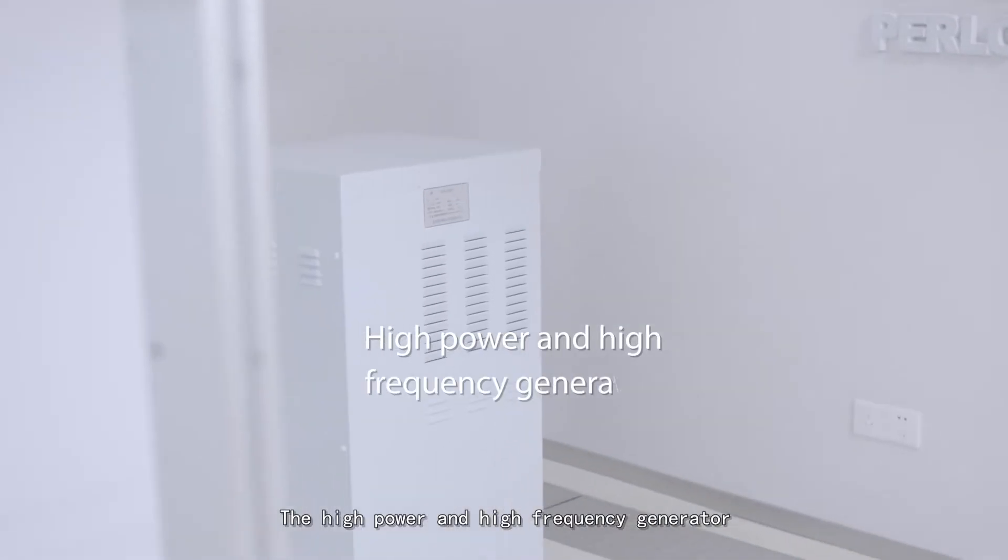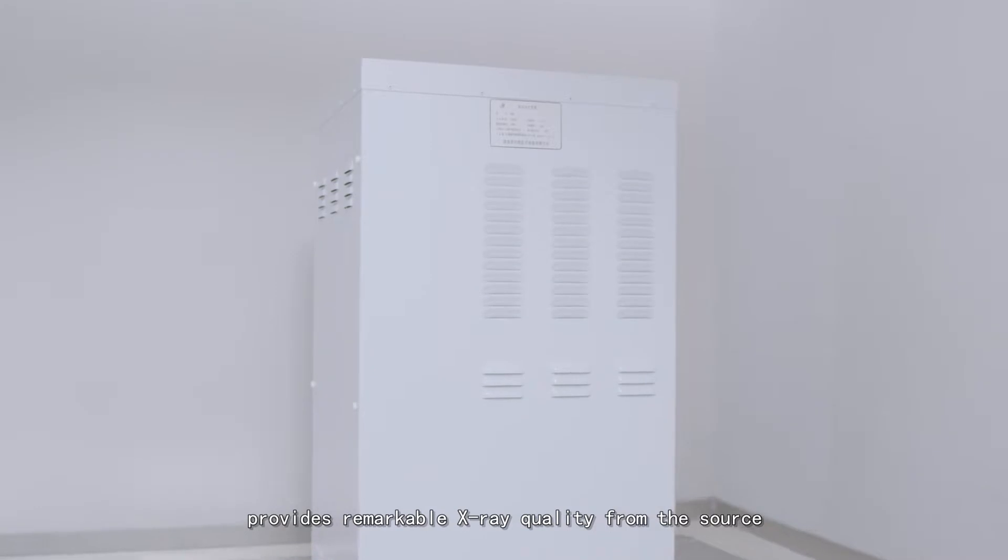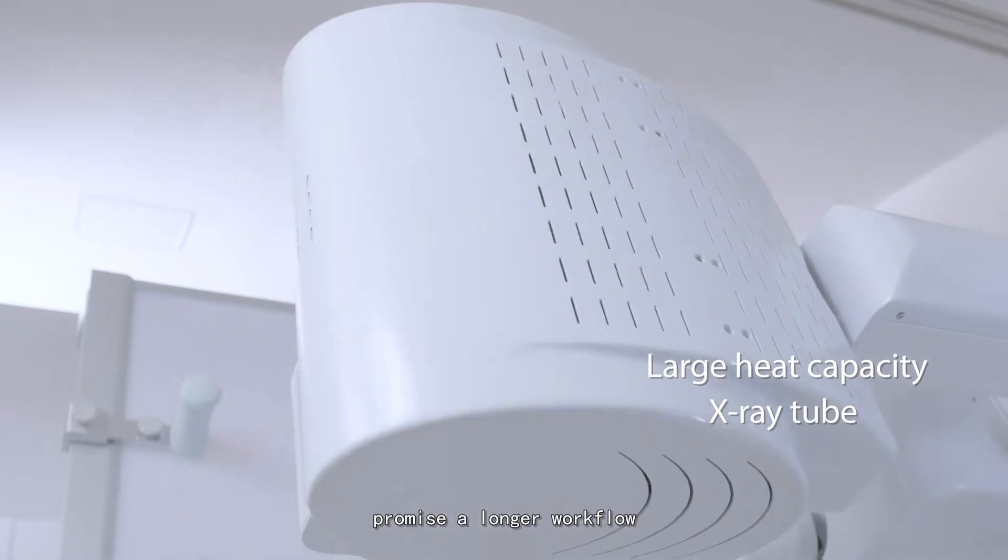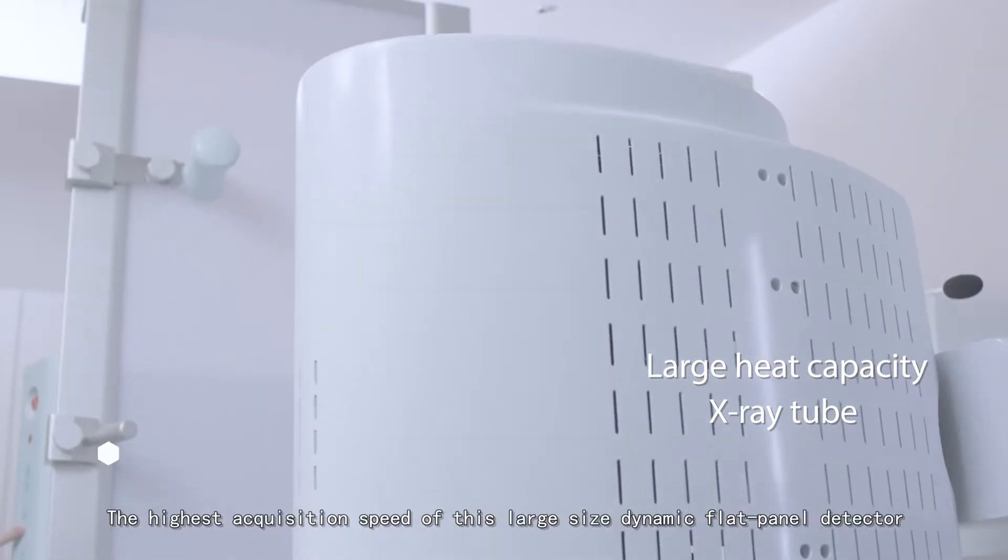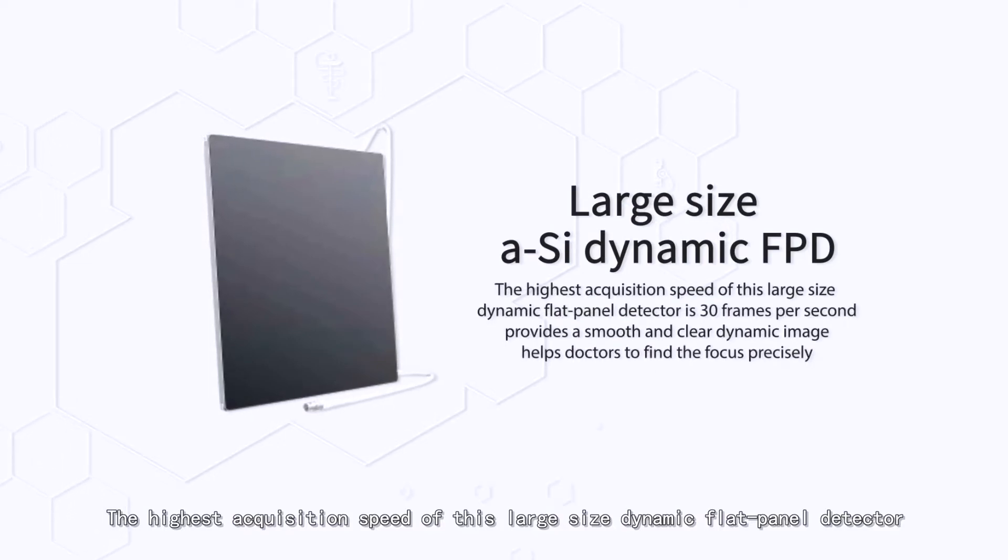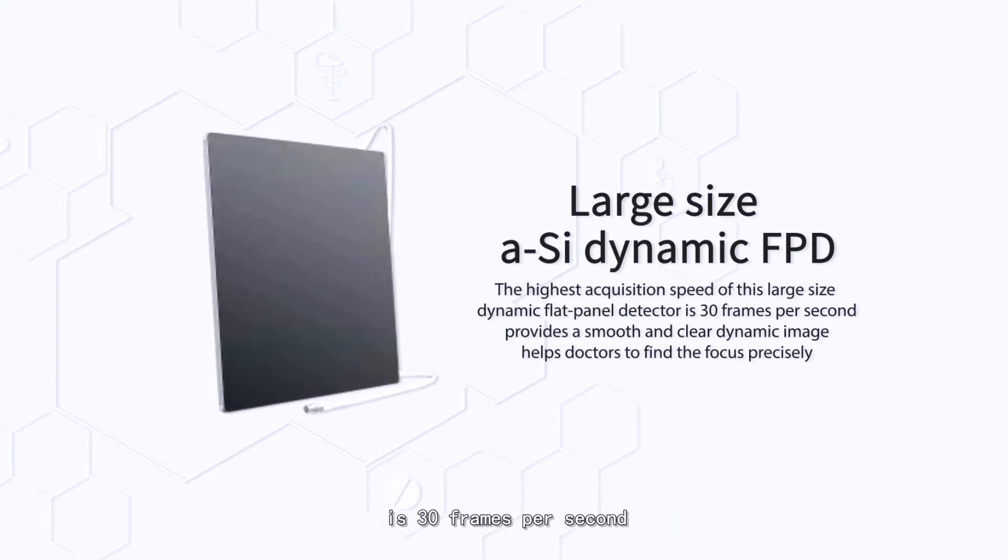The high-power and high-frequency generator provides remarkable X-ray quality from the source. Large heat capacity of X-ray tube promises a longer workflow. The highest acquisition speed of this large-size dynamic flat panel detector is 30 frames per second, providing smooth and clear dynamic images that help doctors find the focus precisely.